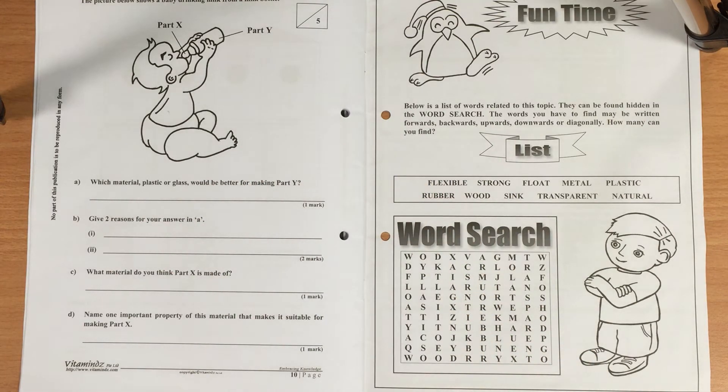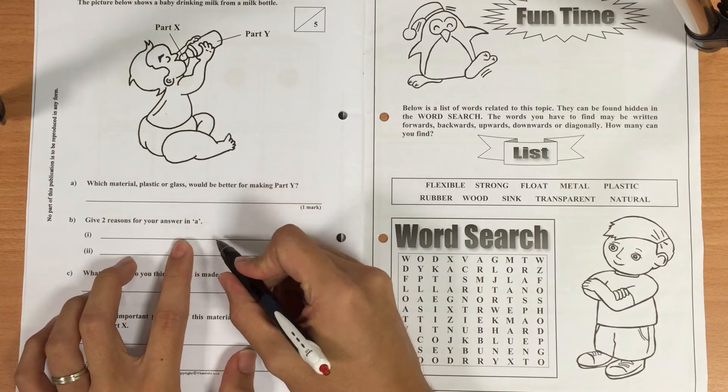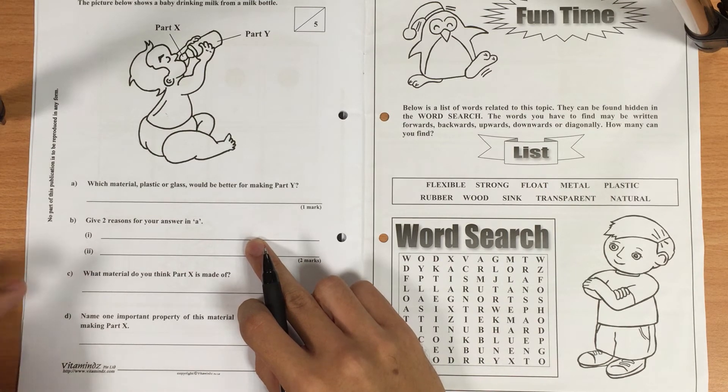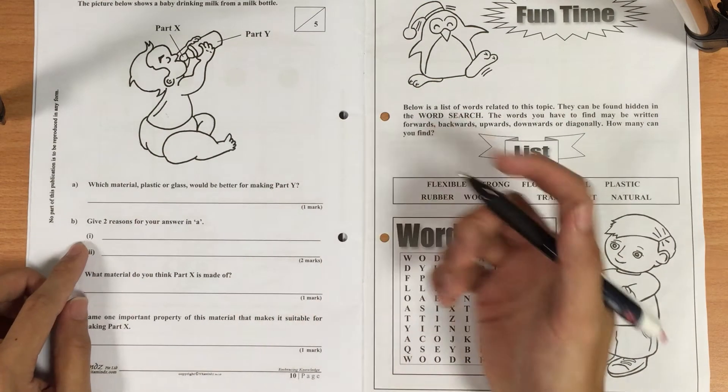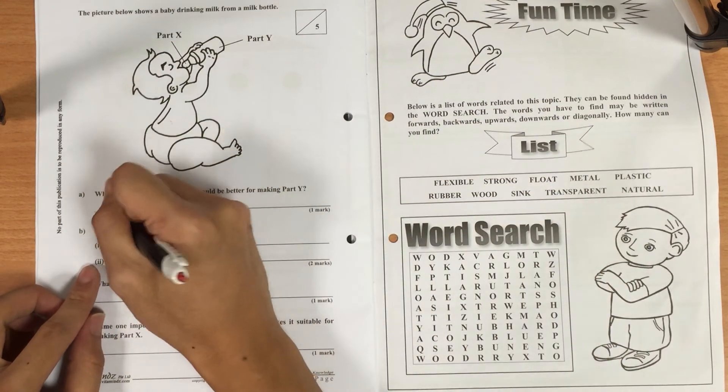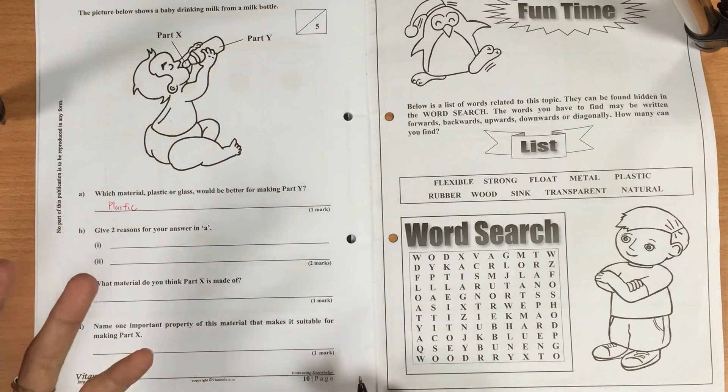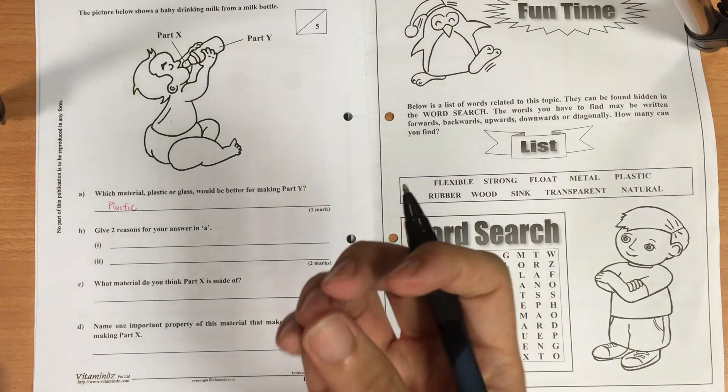For glass, obviously it's very transparent, but for plastic it can be transparent as well. Many of you got the answer for part B as in it is transparent or you say that it is waterproof, but that is not the case. Just for plastic - glass is transparent, glass is waterproof as well, so that may not be the best answer. So in this case, the best material - let me just write this down first. Plastic. The two reasons.